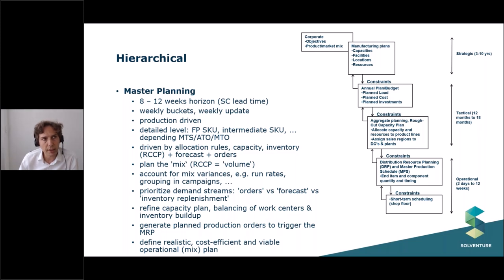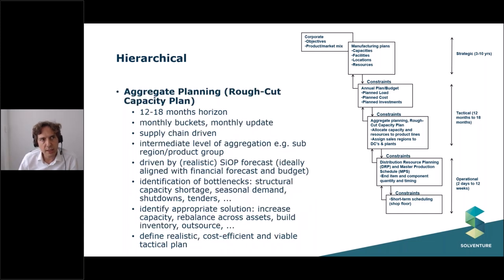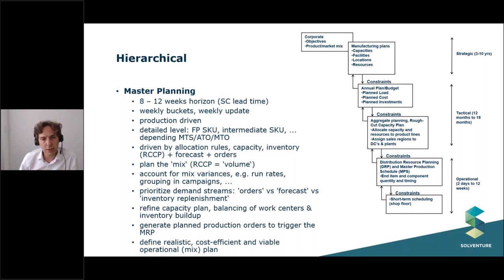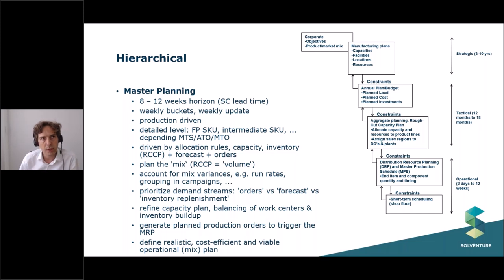As we go deeper, we reach master planning. The original idea was to steer MRP — material requirements planning — ensuring the right components and raw materials are available to make the products needed. For RCCP, monthly buckets at 12 to 18 months are fine. For master planning, you need to be more specific: which materials are needed in which week. In master planning you decide on the specific SKU mix, and you may also group SKUs where changeovers between groups are more significant.